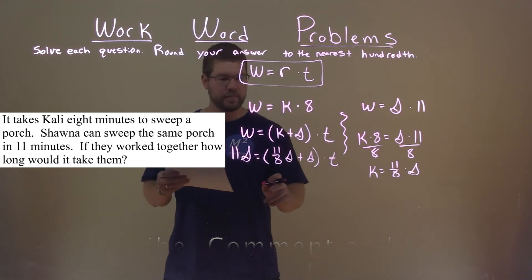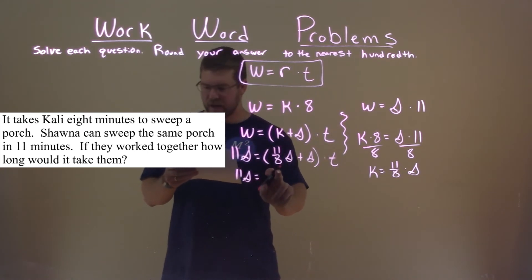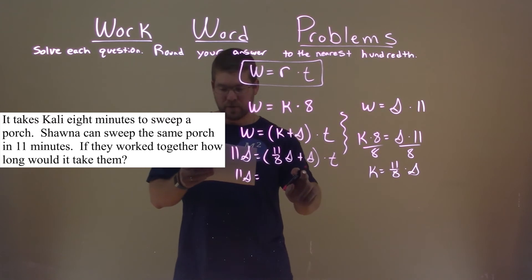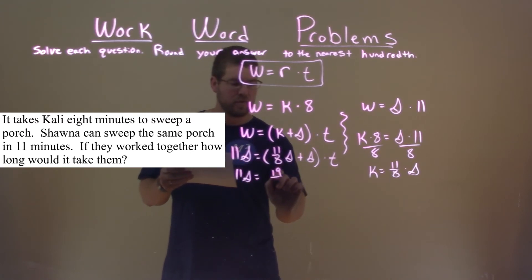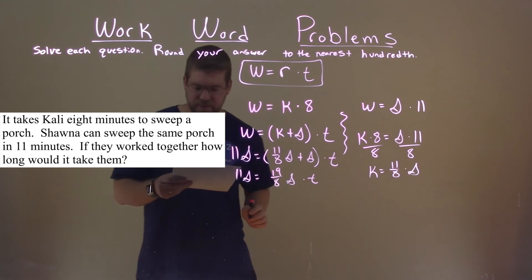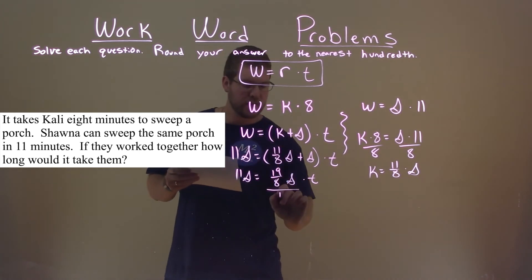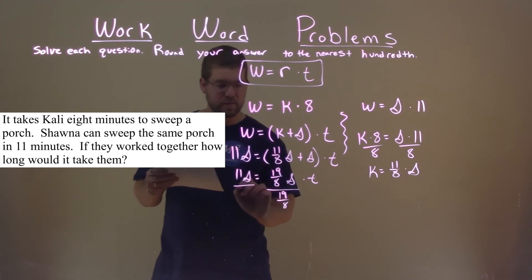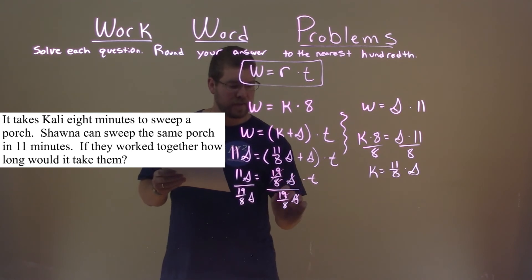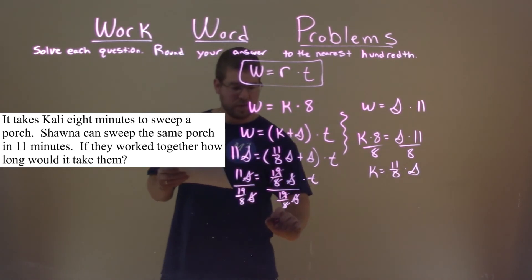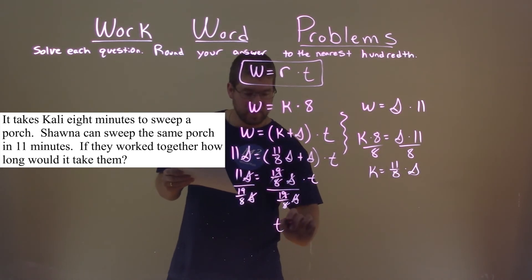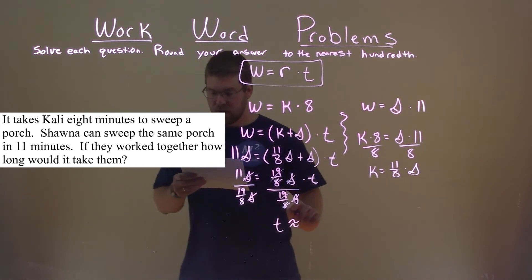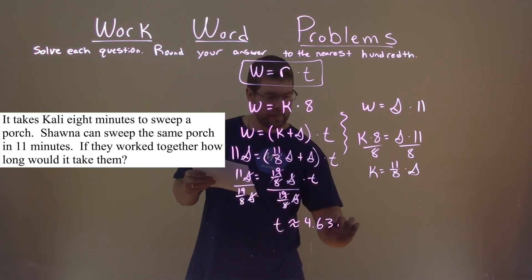You'll see that something happens here. So 11S comes down, and 11/8 S plus 1S, that's 19/8 S, and we're still multiplying that by T. We divide 19/8 S to both sides. The S's cancel, 19/8 cancels here, these S's also cancel. And that leaves us with T by itself, and it's approximately 4.63 minutes.